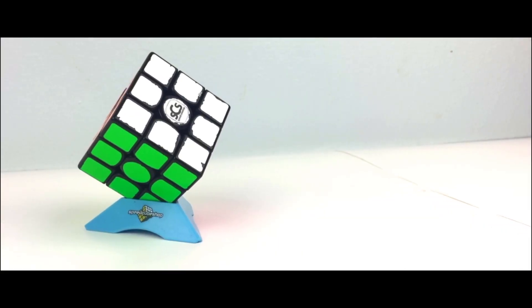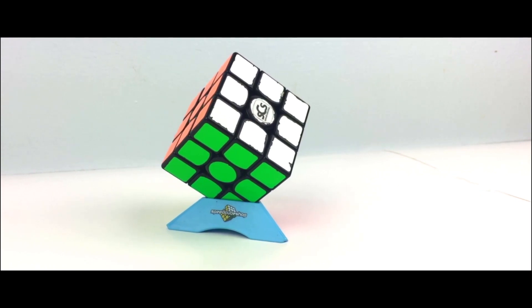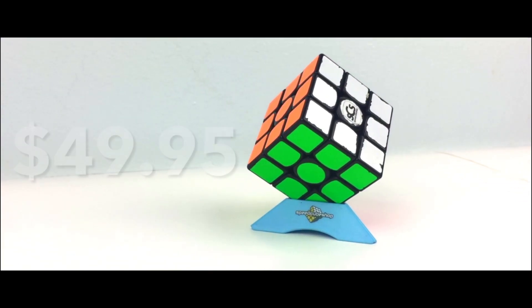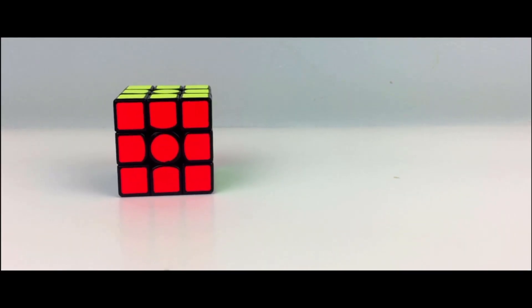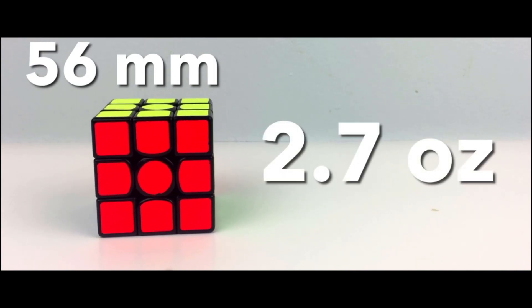The GAN Air SM is the newest edition of GAN's line of 356 cubes, and like we've already mentioned, it comes with an extremely hefty price tag at $49.95 from speedcubeshop.com. Like the name suggests, it has an edge length of 56mm, and it weighs 2.7 ounces, making it feel light and airy.